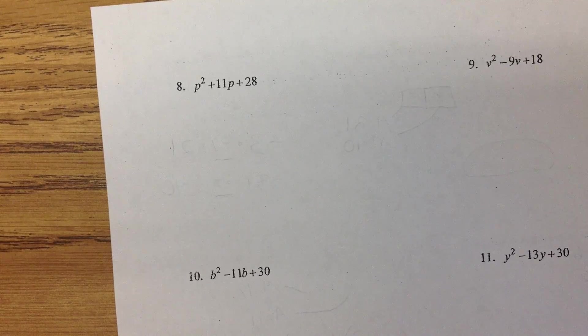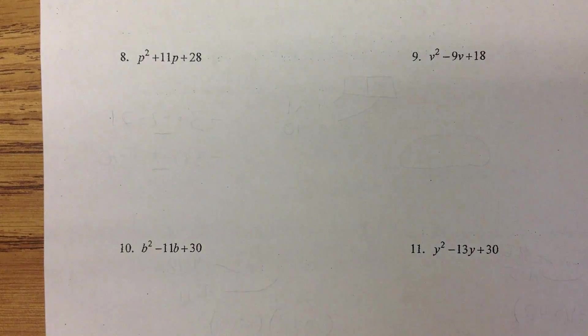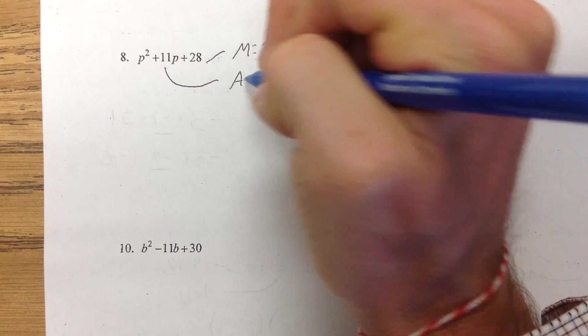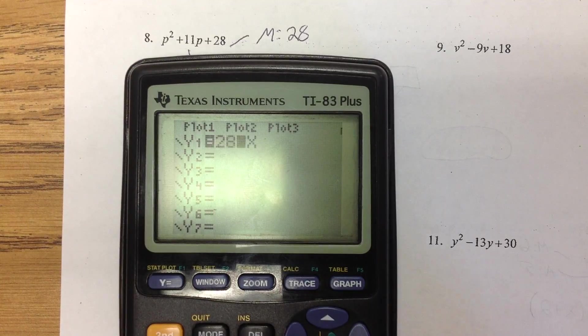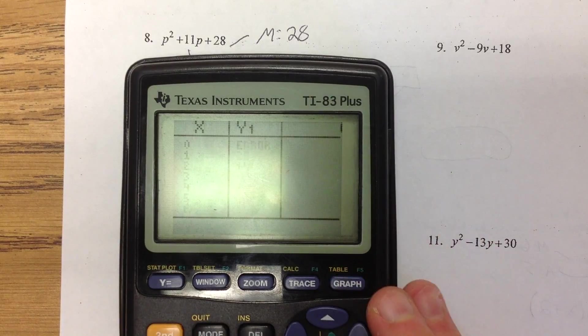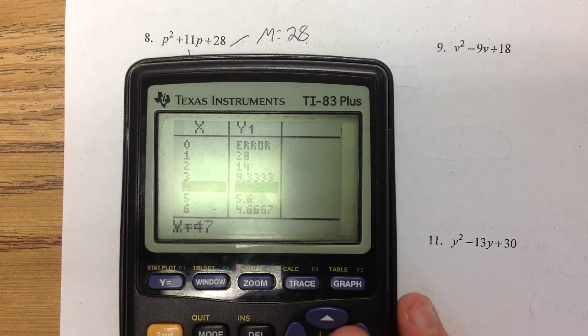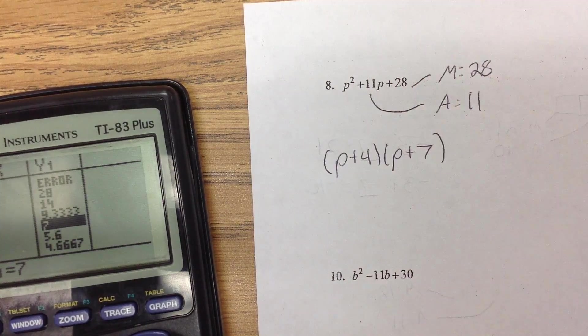Flipping to the back — it's just more of the same. That's really all this homework is: practicing these and getting comfortable with the process. We're multiplying to 28 and adding to 11. Go to the calculator, type in 28 divided by x, and go through it: 1 and 28, 2 and 14, 4 and 7 — yes, 4 plus 7 is 11. So this is p plus 4, p plus 7.